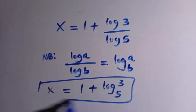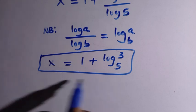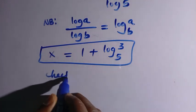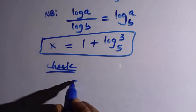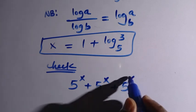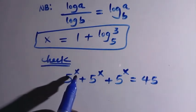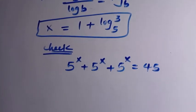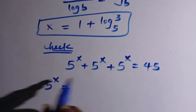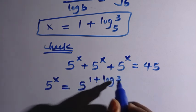Then we get the value of x, which is 1 plus log 3 base 5. And here is the result for the value of x. I have an important gift for you — a takeaway. Let's verify if this is truly equal. We get x equals 1 plus log 3 base 5. From the original question, 5 power x plus 5 power x plus 5 power x equals 45. When we substitute x here, everything must give us 45. For 5 to the power of x, when we substitute x, we have 5 raised to power 1 plus log 3 base 5.